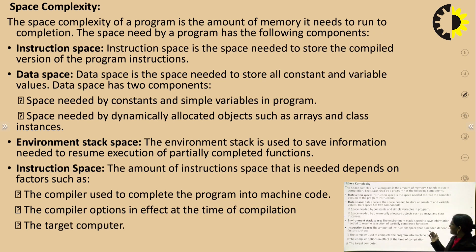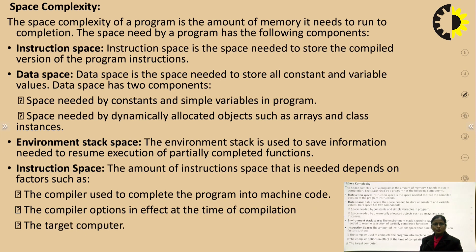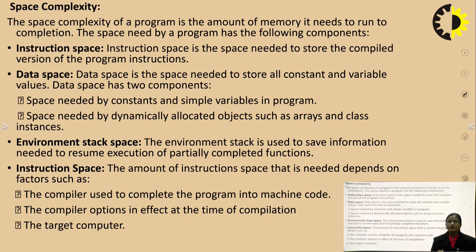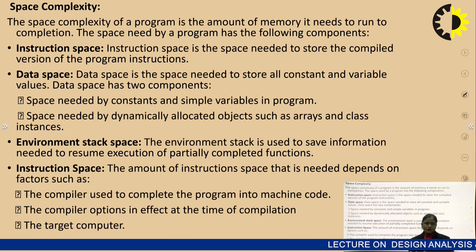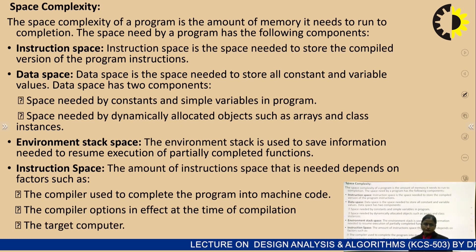Instruction space depends on factors such as the compiler used to compile the program into machine code. The basic work of the compiler is to convert source code into machine code, and the compiler itself needs some space. So instruction space also depends on the compiler options in effect at the time of compilation and the target computer on which the program is saved.